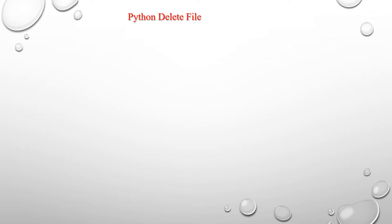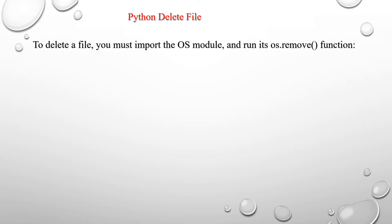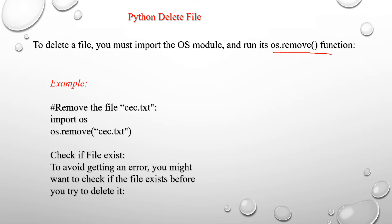Now we will see how to delete Python files. To delete a file, you must import the os module and run os.remove(). This is the built-in function in the os module. For example, I want to remove cec.txt. First import the os module, then use os.remove() with the file name cec.txt inside the parentheses. This instruction will remove the file.